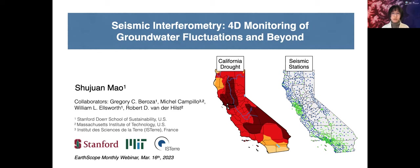Here, 4D means one dimension in time plus three dimensions in space. So this second part of my title means that my talk today will be focusing on one monitoring application about the groundwater fluctuations in California. But this seismological approach can be used to monitor a variety of near-surface processes, on timescales from a couple of days to a few decades, and at spatial scales from the Earth's surface to a few kilometers depth.